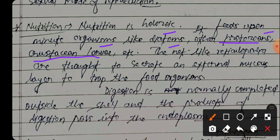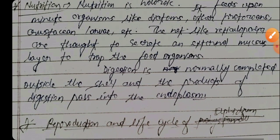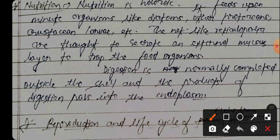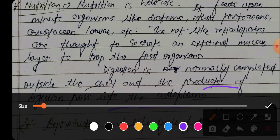The net-like reticulopodia are thrown out to secrete an external mucus layer to trap food organisms. Digestion is normally completed outside the cell, and the products of digestion pass into the endoplasm.